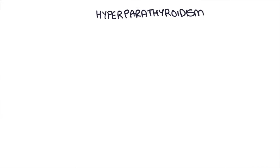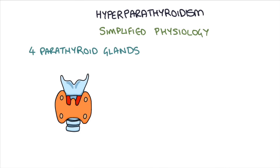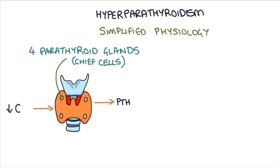Firstly, I'm going to go through some simplified physiology. Bear in mind that in reality the processes are a bit more complicated, but for the purpose of medical school, everyday practice, and understanding hyperparathyroidism, this is all you really need to know. There are four parathyroid glands situated in four corners of the thyroid gland. The parathyroid glands, specifically the chief cells in the glands, produce parathyroid hormone in response to low blood calcium concentration.